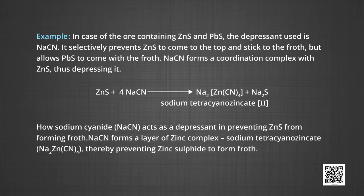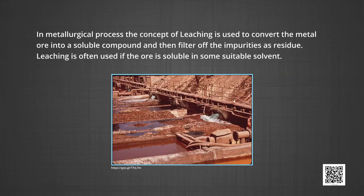The processes discussed till now were basically physical methods of concentration of ore. For some ores, the chemical process of leaching is used. In general, leaching means to separate soluble constituents of a mixture by passing a suitable liquid through it. In metallurgical processes, leaching is used to convert the metal ore into a soluble compound and then filter off the impurities as residue. Leaching is often used if the ore is soluble in some suitable solvent. The first example is leaching of alumina from bauxite. The principal ore of aluminium, bauxite, usually contains silica SiO₂, iron oxides and titanium oxide TiO₂ as impurities.